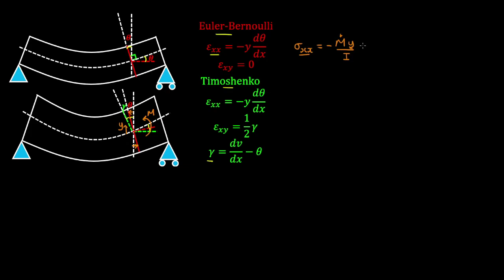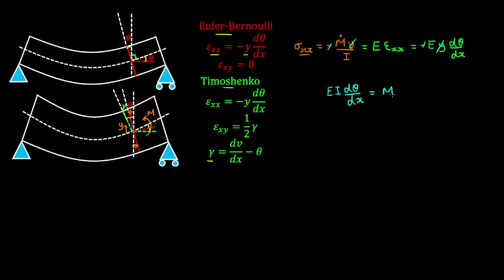The bending stress is equal to Young's modulus times the bending strain. Substituting for the bending strain, we obtain the following expression, and we can cancel the y's and the negatives to write the bending moment in terms of the curvature due to bending. This is our first equation, which is applicable to both beams.